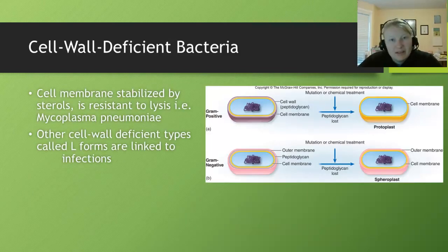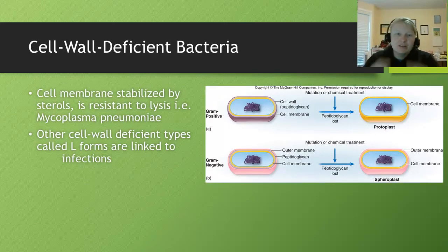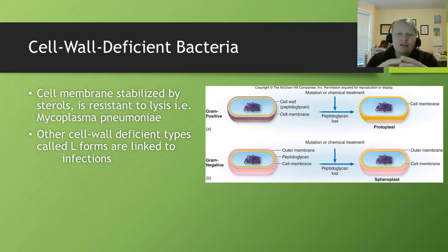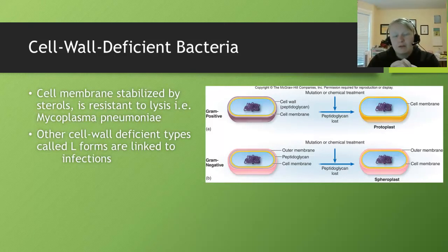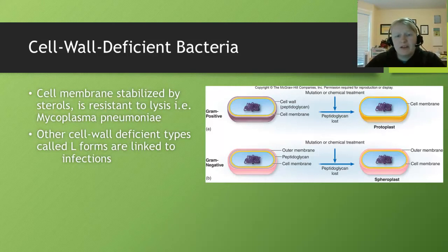We can also manipulate the cell wall — and bacteria can do it to themselves through a mutation process. By doing that, we change the wall, and they become protoplasts or spheroplasts, actually losing their peptidoglycan. This allows us to use them for different research projects. When they are linked to an infection, we call these L-forms. Just be aware that we can modify these, or they can modify themselves, depending on the environment.